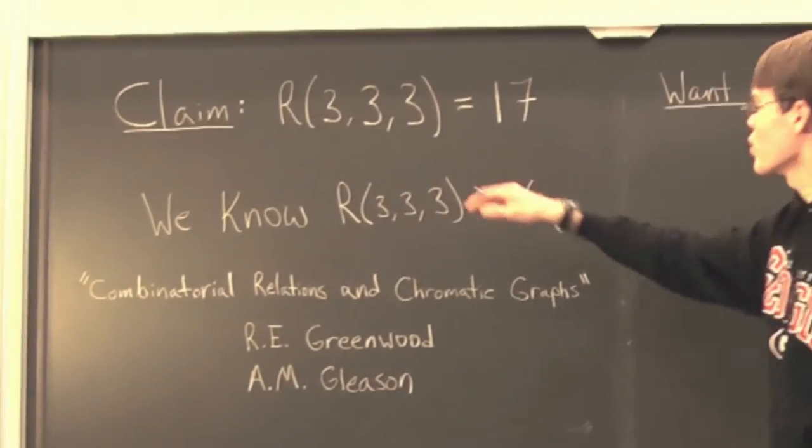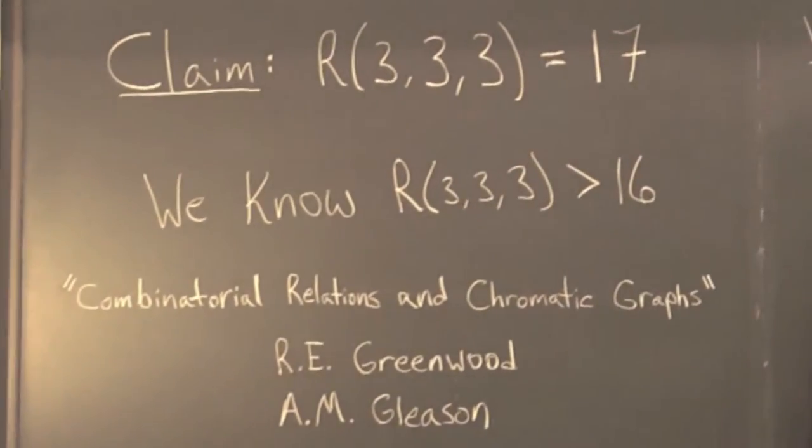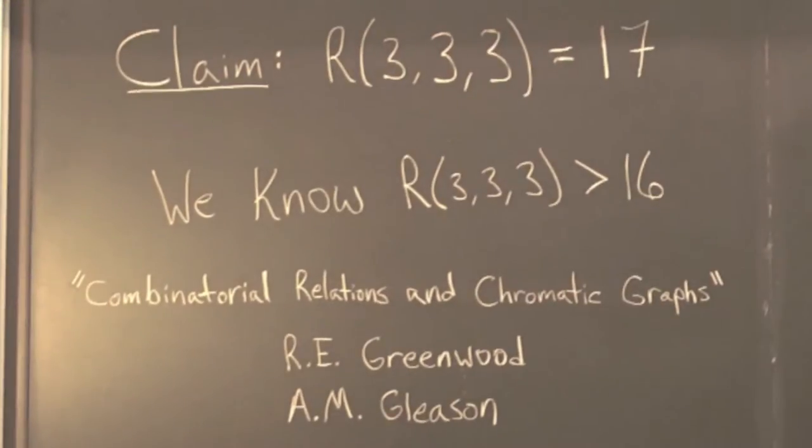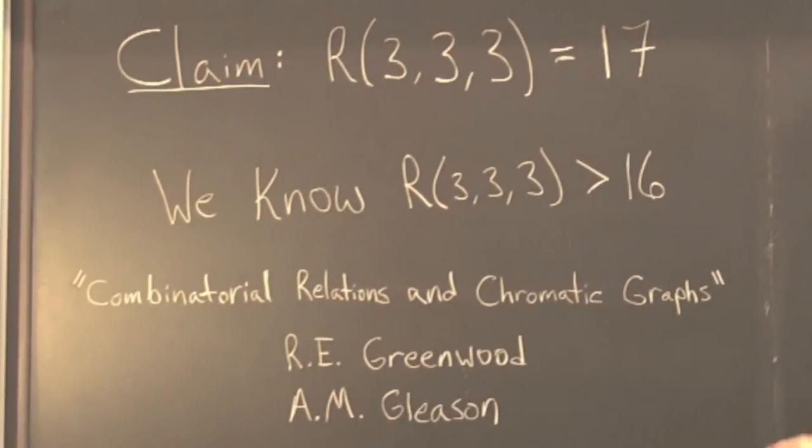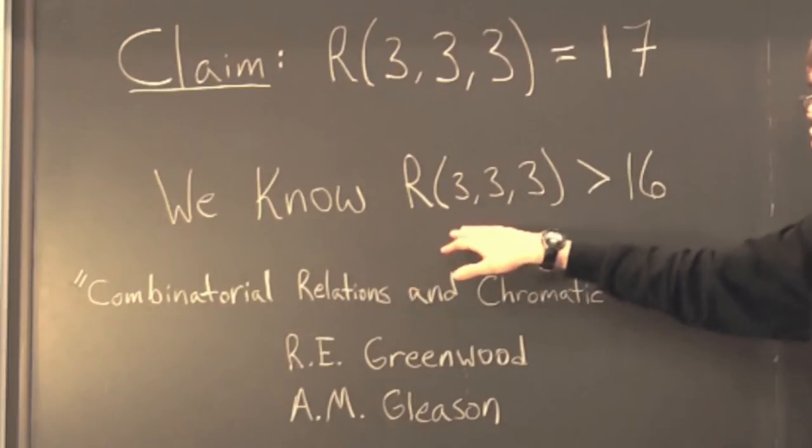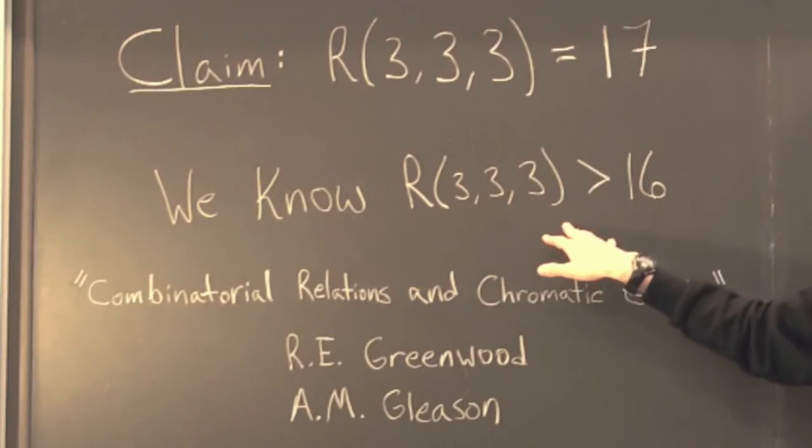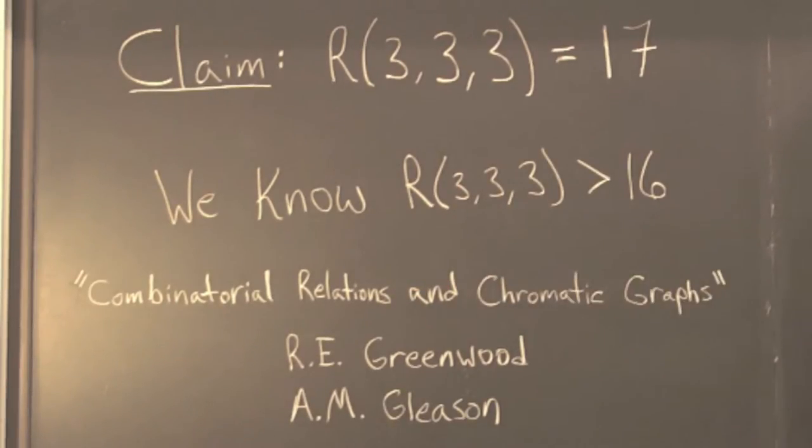Okay, so we claim that R(3,3,3) is equal to 17. Now, for the purposes of this video, I'm going to just say that we know that this Ramsey number is greater than 16, and this result was proven in a paper entitled Combinatorial Relations and Chromatic Graphs. This was published back in the 1960s by Greenwood and Gleason, but the proof of this result is a little bit beyond the scope of today's video.